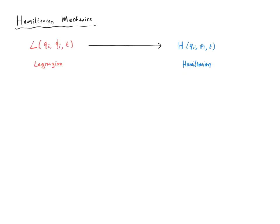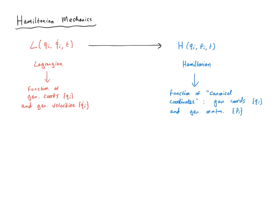We'll also look at the conditions for which the Hamiltonian is conserved or not conserved, and we'll see that this is actually independent of whether it can be interpreted as an energy. Finally we'll look at the most general Legendre transformation for a non-scleronomic system, for example a transformation to a rotating coordinate frame. We'll be doing plenty of examples in this lecture, so let's get down to work.